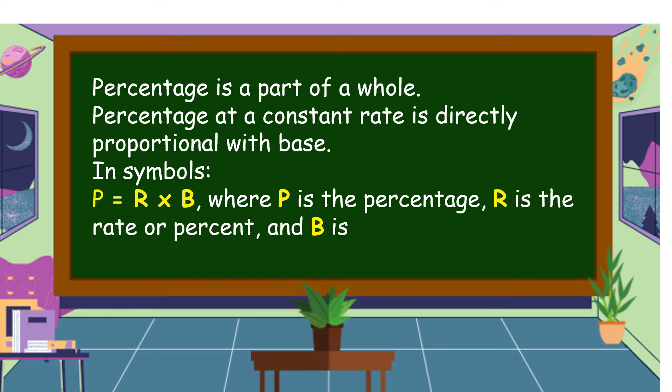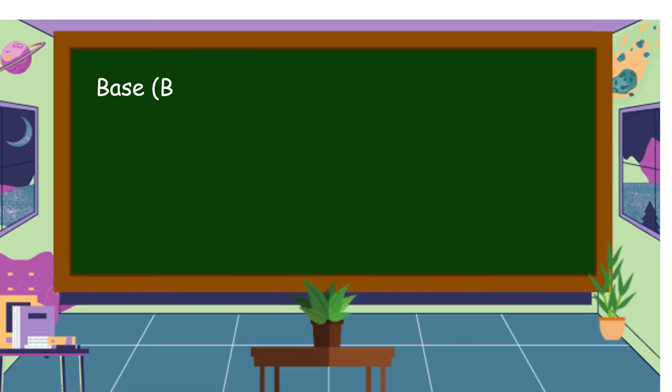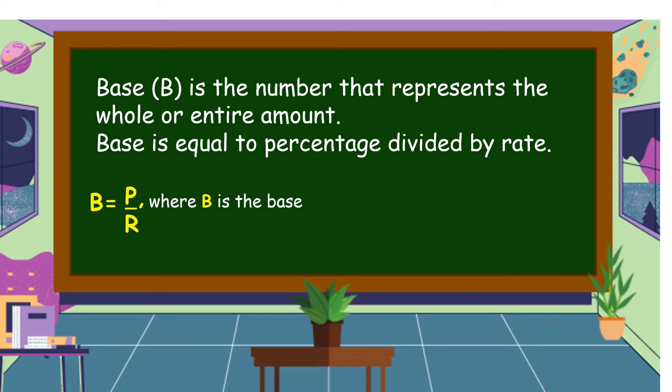On the other hand, base is the number that represents the whole or entire amount. Base is equal to percentage divided by rate. B is equal to P over R, where B is the base, P is the percentage, and R is the rate or percent.